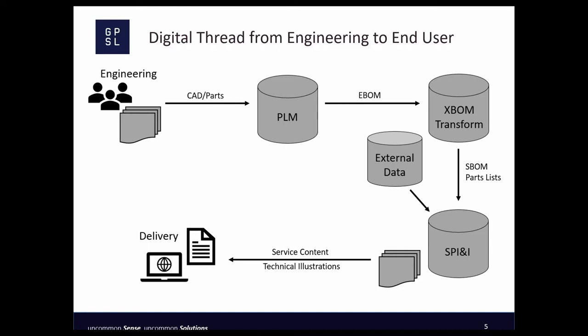Engineering puts CAD and parts data into the project lifecycle management or PLM system. That data might be managed in Creo Illustrate and stored directly into Windchill. It might be ingested from another PLM system. It might be uploaded via a step file or even a spreadsheet of parts. How the data comes in and what attributes and metadata it maintains is configurable. But the engineering data goes into the PLM system. From that engineering data and PLM, we get the Engineering Bill of Materials or EBOM. The key to initiating the digital thread starts right here.